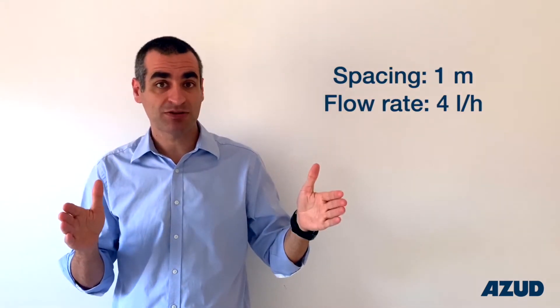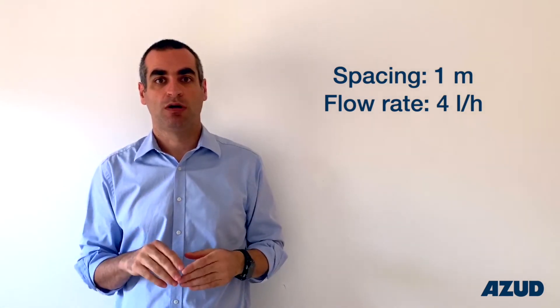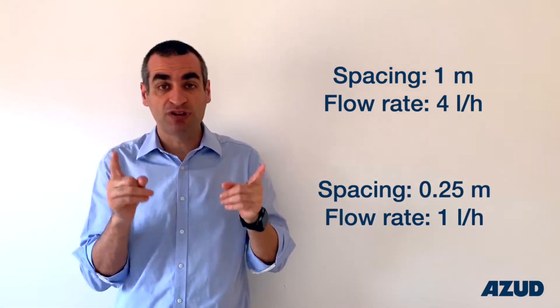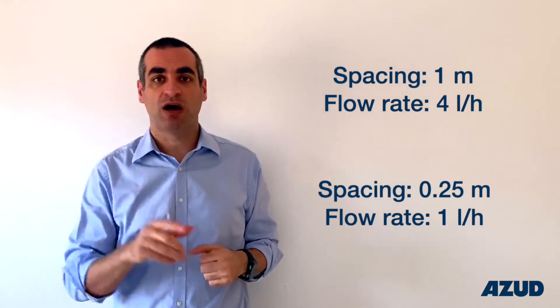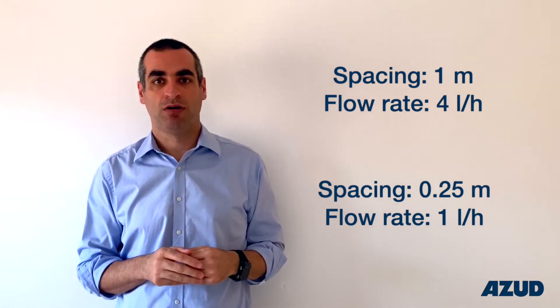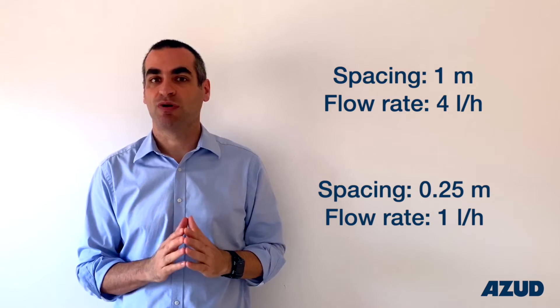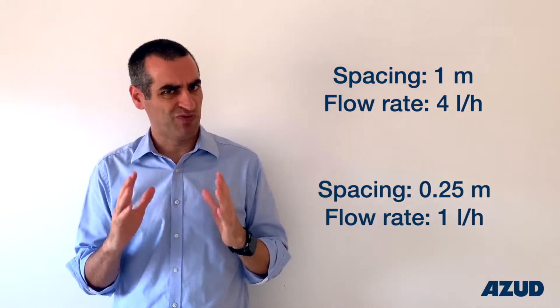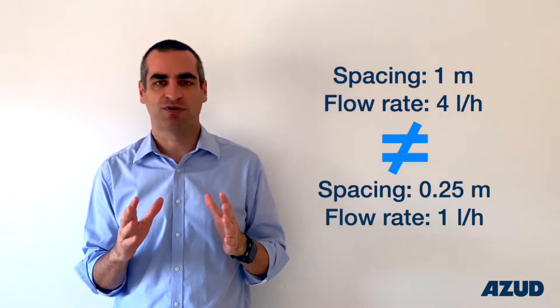I will give you an example. Let's imagine one drip line that has 1 meter spacing and 4 litres per hour, and another one that has 25 cm spacing and 1 litre per hour. They will both give you exactly the same amount of water. But will the performance be the same? Of course not.